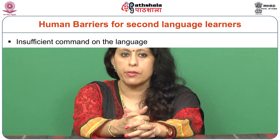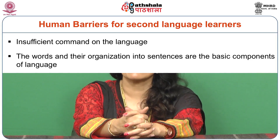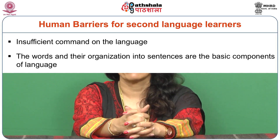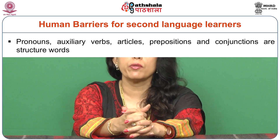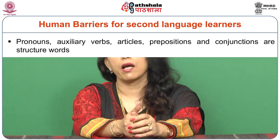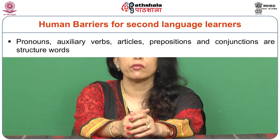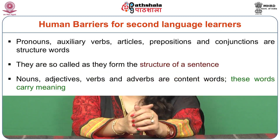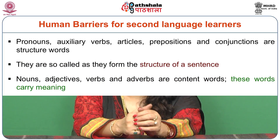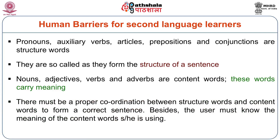While discussing human barriers and insufficient command of language, the words and their organization into sentences are the basic components of language. Words are of two types: structural words and content words. Pronouns, auxiliary verbs, articles, prepositions and conjunctions are structural words — they form the structure of a sentence. Nouns, adjectives, verbs and adverbs are content words because they carry meaning. There must be proper coordination between structural words and content words to form a correct sentence. The user must know the meaning of the content words being used to convey or communicate.